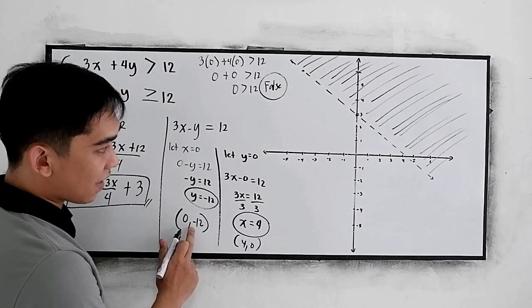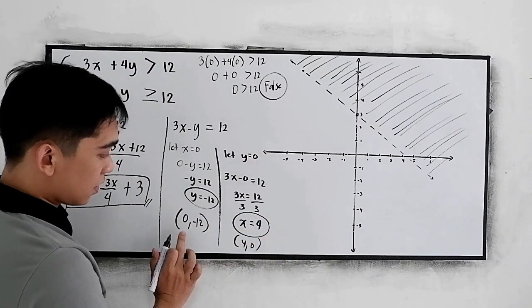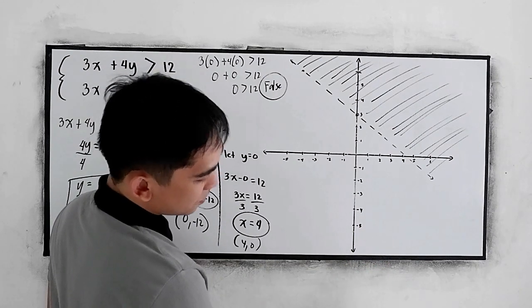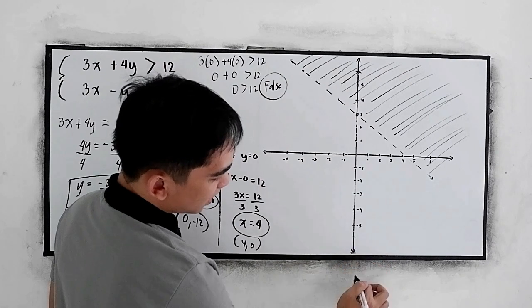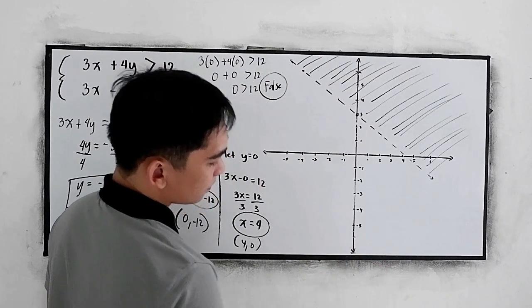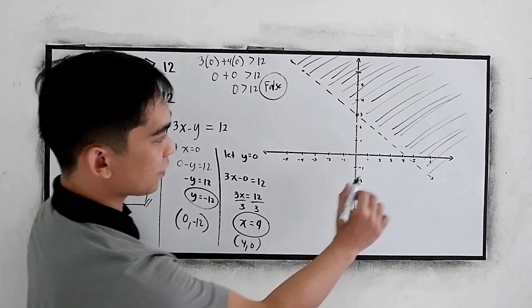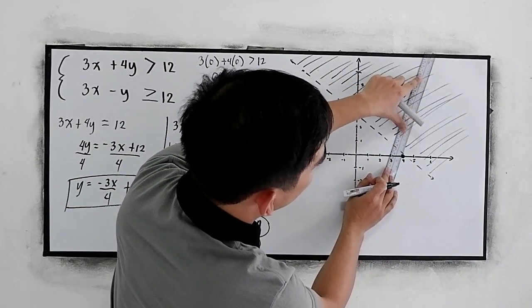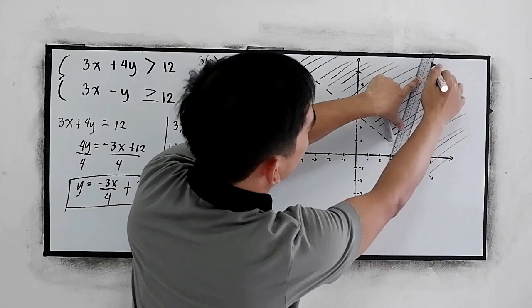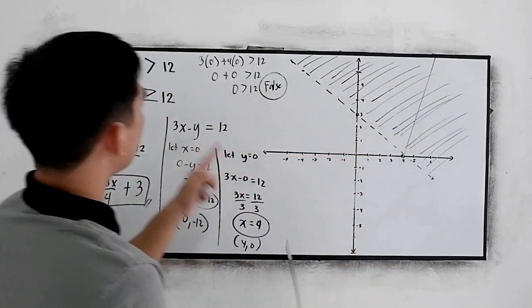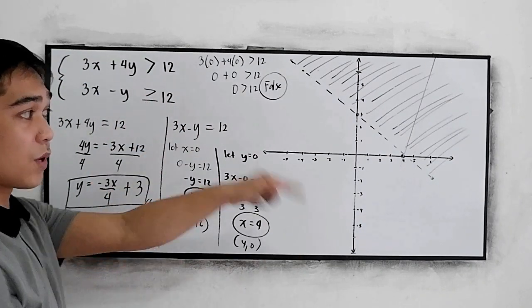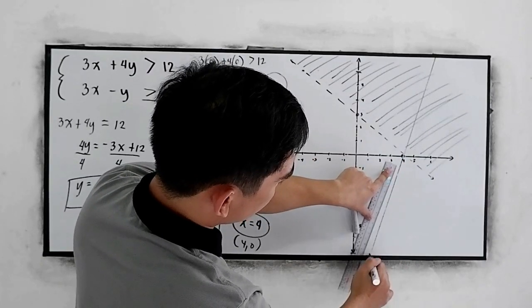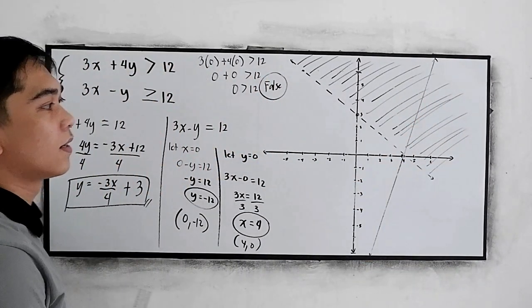Plot the points (0, negative 12) and (4, 0) on the Cartesian plane. Connect these points. Since the inequality is greater than or equal to, we use a solid line.